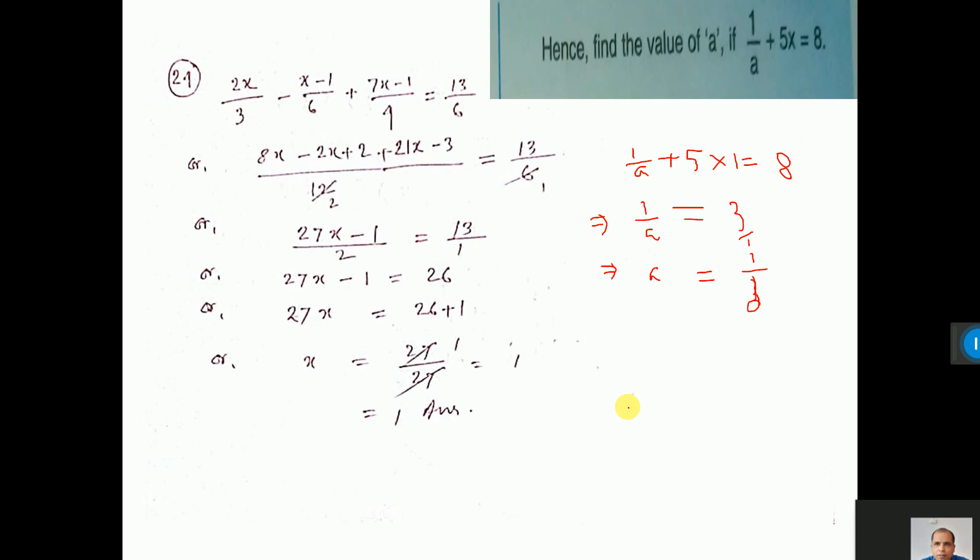This one see. Do LCM. So if you take LCM, then 3 4s are 12. 4 into 2x that is 8x. 6 2s are 12. So 2 into this. 2x plus 2. Because minus minus plus it will be. 4 3s are 12. So 3 7s are 21. 3 1s are 3. Then cut 6 to 12. Now do cross multiplication. 2 into 13. Here it is done. 2 into 13, 26 and 1 into this.